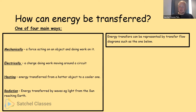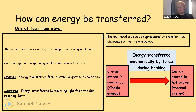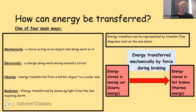Energy transfers can be represented by transfer flow diagrams. You don't have to do anything fancy — in science we draw things in boxes and give them a label. The kinetic energy of the car is on the left, and the arrow shows energy is transferred from the kinetic energy store of the car to the thermal energy store of the hot brakes when you apply the brake. This energy is transferred mechanically by the force of putting your foot on the pedal and the brakes being pushed against the wheels during braking.